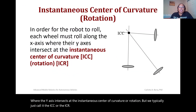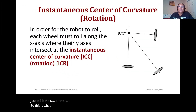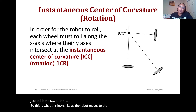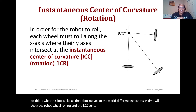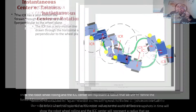As the robot moves through the world, different snapshots in time will show the robot wheel rolling, and the ICC center will represent a radius that we use to define the forward kinematics for the robot.